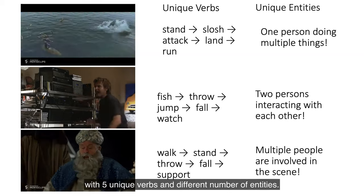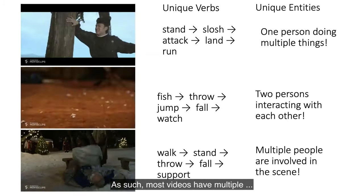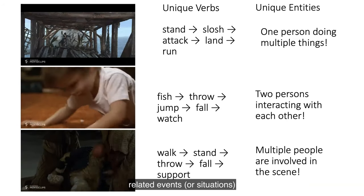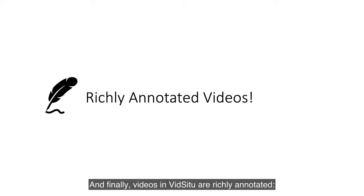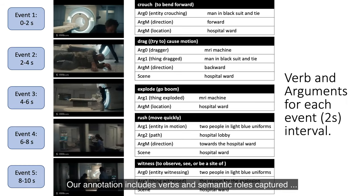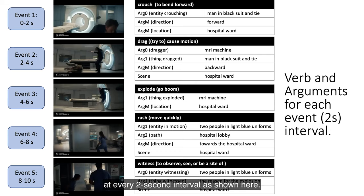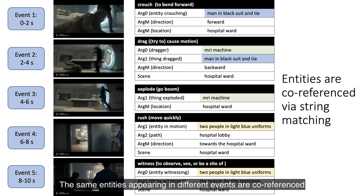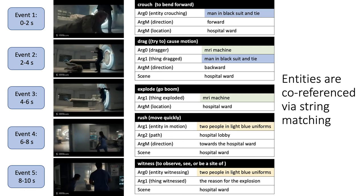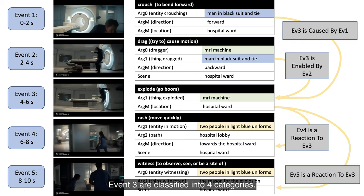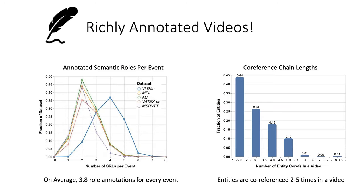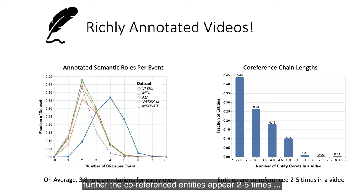Here we show examples of videos with 5 unique verbs and different numbers of entities. Most videos have multiple related events or situations occurring within the same video. Videos in VidC2 are richly annotated: our annotation includes verbs and semantic roles captured at every 2-second interval as shown here. The same entities appearing in different events are also co-referenced, shown by highlighted bars. Moreover, event relations with respect to each event are classified into 4 categories. On average, VidC2 has 3.8 role annotations for every event, and coreference entities appear 2 to 5 times across the entire video.